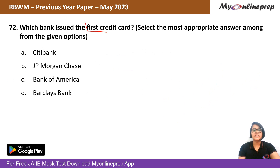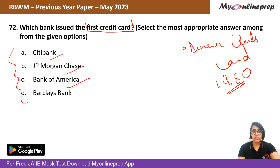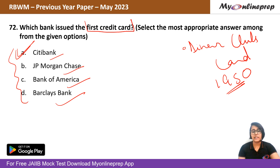Question 72: Which bank issued the first credit card? Options: Citibank, Morgan Chase, Bank of America, or Barclays Bank. The first credit card was the Diner's Club Card, issued in 1950. This laid the foundation for the modern credit card industry. The right answer is option A — Citibank issued the first credit card.